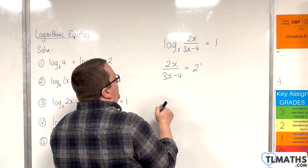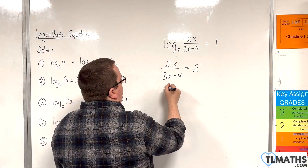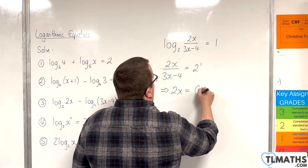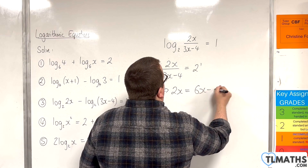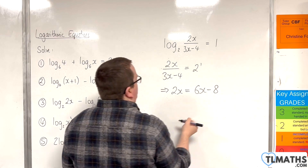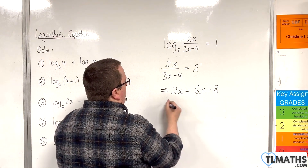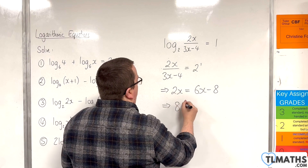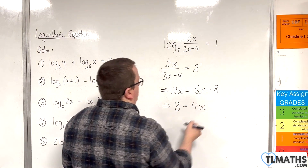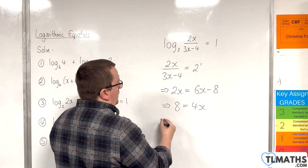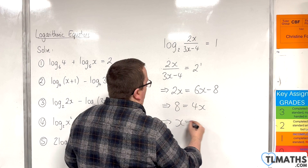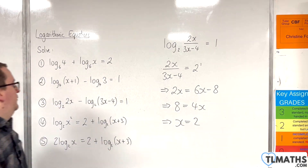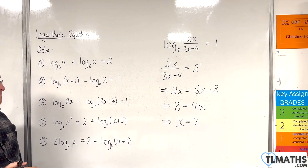Multiply both sides by (3x minus 4), and we'll get 2x is equal to 6x take away 8. Subtract 2x from both sides and add 8 to both sides, so x will be equal to 2. And that solves question number 3.